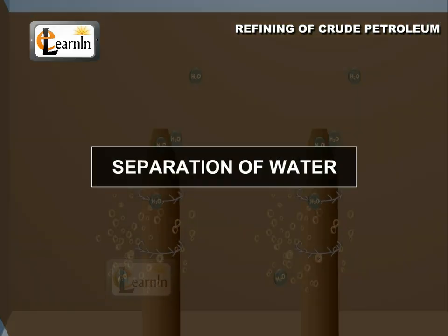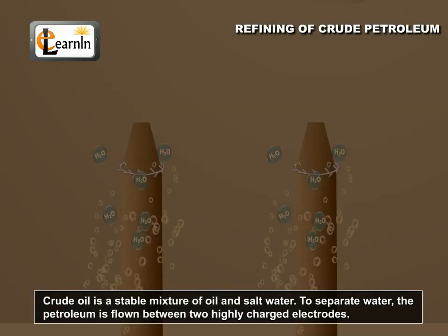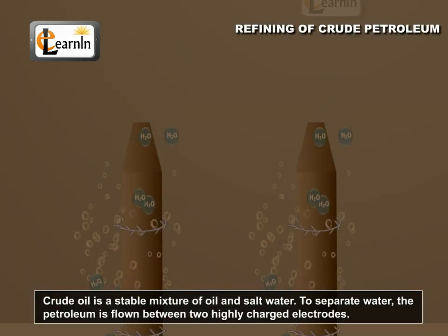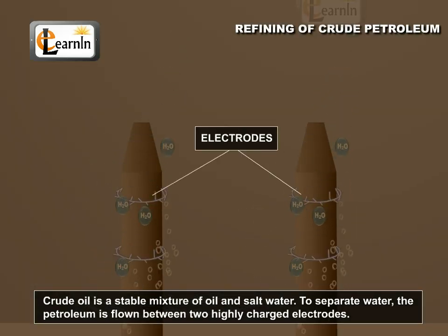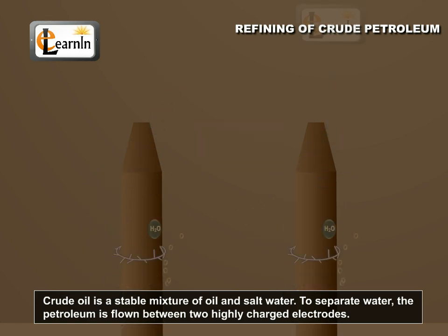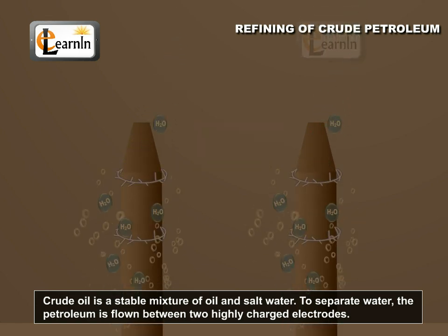Separation of water. Crude oil is a stable mixture of oil and salt water. To separate water, the petroleum is flown between two highly charged electrodes. Water drops are formed and are separated out.